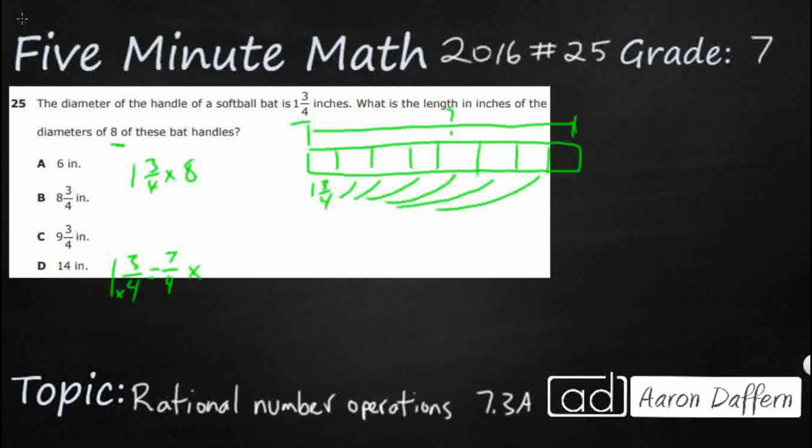Now, we want to multiply that by 8. Well, any whole number can be turned into a fraction if you simply put it over 1. 8 over 1 is the same as just 8. This becomes easy because now we can do straight across. 7 times 8 is going to be 56. 4 times 1 is 4. Now, let's divide. 4 goes into 56.